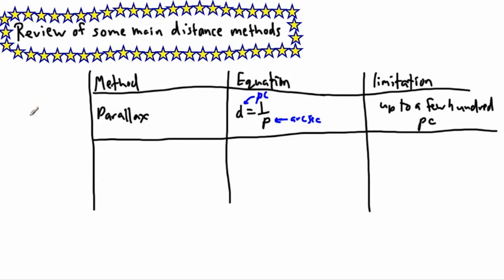Now this method uses geometry. Remember we were drawing things, we were doing something like this and like this. We were finding this, this is D, and this here was P, and that's how we did it. So it uses geometry. Now the next method was spectroscopic parallax.